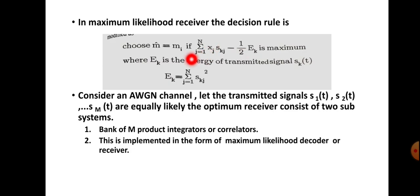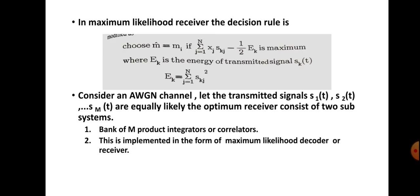This is the correlation receiver where e-k is the energy of the transmitted signal s-k of t. E-k equals sigma j equals 1 to N of s-k-j whole squared. If we are considering an AWGN channel and assuming the transmitted signals are s1(t), s2(t), up to s-m(t), and suppose all these are equi-probable, then the optimum receiver is defined.